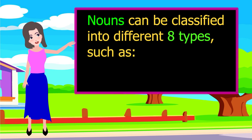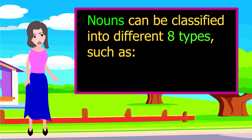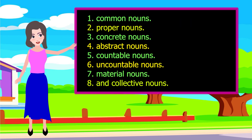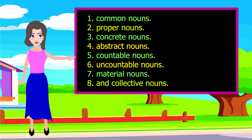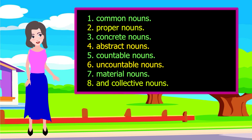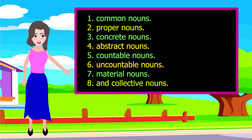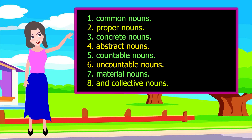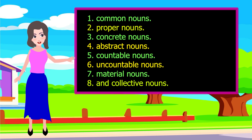Nouns can be classified into eight different types: 1. Common nouns, 2. Proper nouns, 3. Concrete nouns, 4. Abstract nouns, 5. Countable nouns, 6. Uncountable nouns, 7. Material nouns, and 8. Collective nouns.